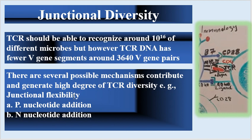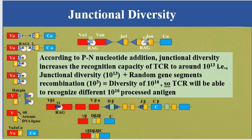Junctional diversity takes the form of P nucleotide addition and N nucleotide addition. Addition of P nucleotides increases the recognition capacity of TCR to around 10 to the power of 13. Junctional diversity of 10 to the power of 13 plus random gene segment recombination of around 10 to the power of 13 together lead to a total diversity of 10 to the power of 16, enabling TCR to recognize 10 to the power of 16 processed antigens.